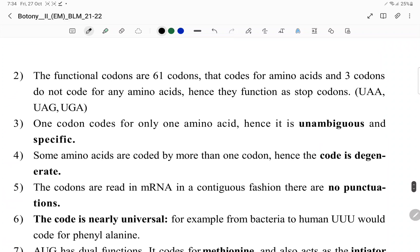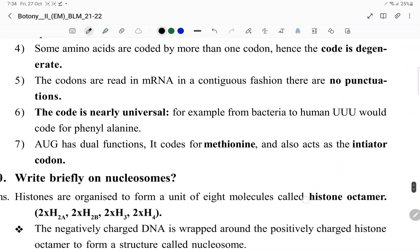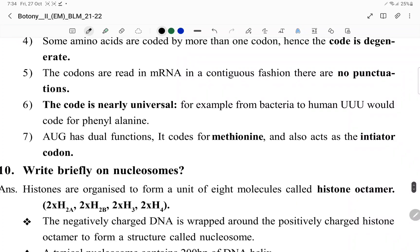The genetic code is triplet. There are 61 coding codons or functional codons, and three that do not code for anything, which are stop codons: UAA, UAG, and UGA. One stop codon specifies only one amino acid. One codon specifies a particular amino acid, making it unambiguous and specific. One amino acid can have more than one codon, so the code is degenerate. Codons are read on mRNA in a contiguous fashion with no punctuations. The codon is nearly universal. For example, from bacteria to humans, UUU codes for phenylalanine. AUG has a dual function: it codes for methionine and also acts as the initiator codon.